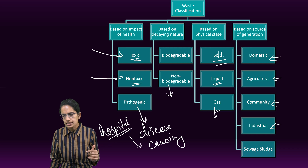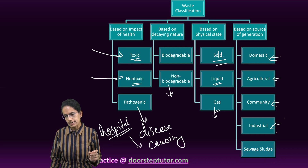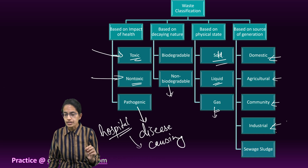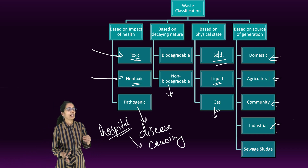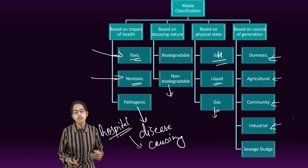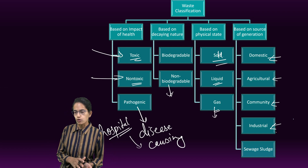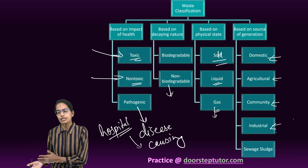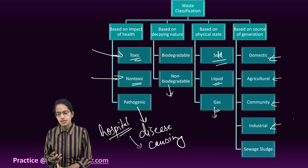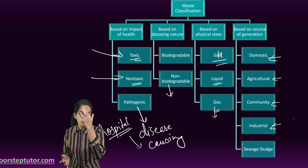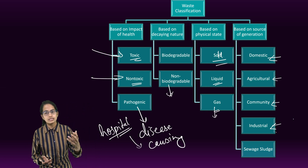The next is industrial waste, which has various categories. It could be electronic waste, which includes computers, computer accessories, stereo systems, televisions, and radios. Industrial waste also includes biomedical waste and hospital waste — from hospitals, clinics, and pathological laboratories. The next is municipal waste, which includes discharge from public places and public toilets.